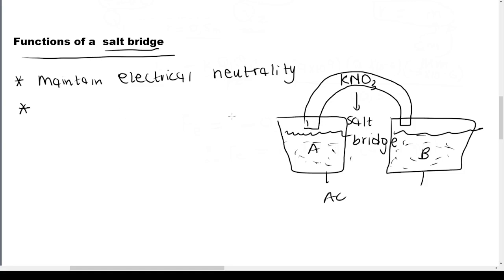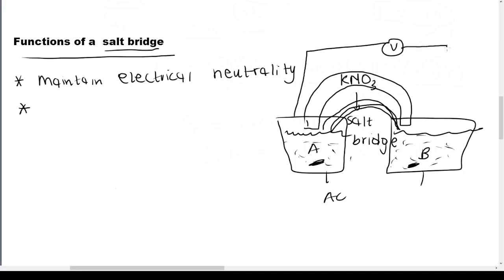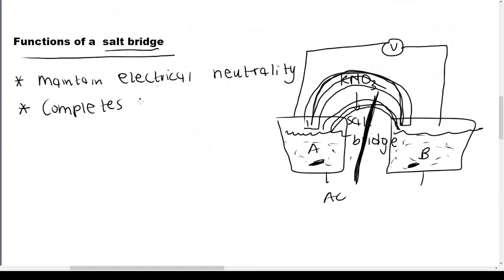Another function of a salt bridge is to complete the circuit. If we have half cell A and half cell B and there is no salt bridge, there is no connection between A and B. The salt bridge makes sure that there is a closed circuit — there is an external circuit with a voltmeter connector, and the salt bridge closes the gap between the two half cells. So the second function of a salt bridge is to complete the circuit.